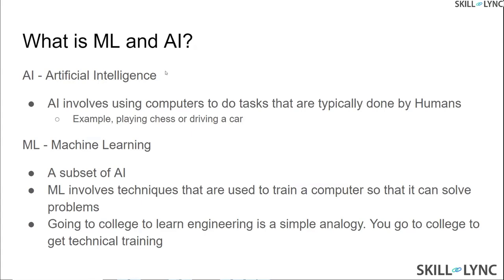A great analogy is going to engineering college — you enroll to learn engineering, the college trains you, and then it tests you. In machine learning, you train your computer to understand a particular problem and see if it solves it well. If you train your model badly you get garbage results — garbage in, garbage out. When people talk about data science, artificial neural networks, or convolutional neural networks, they are 90 to 95 percent of the time talking about machine learning.